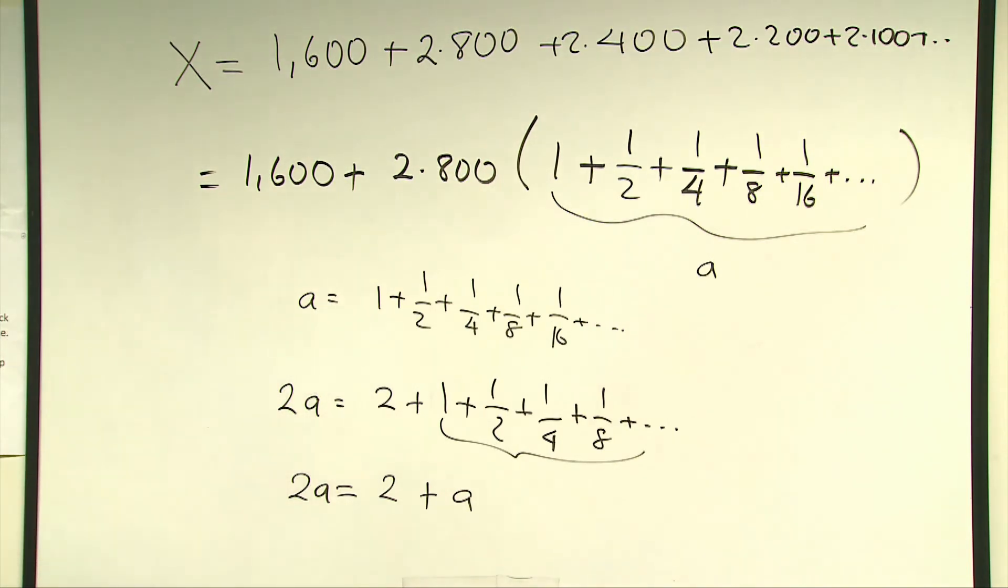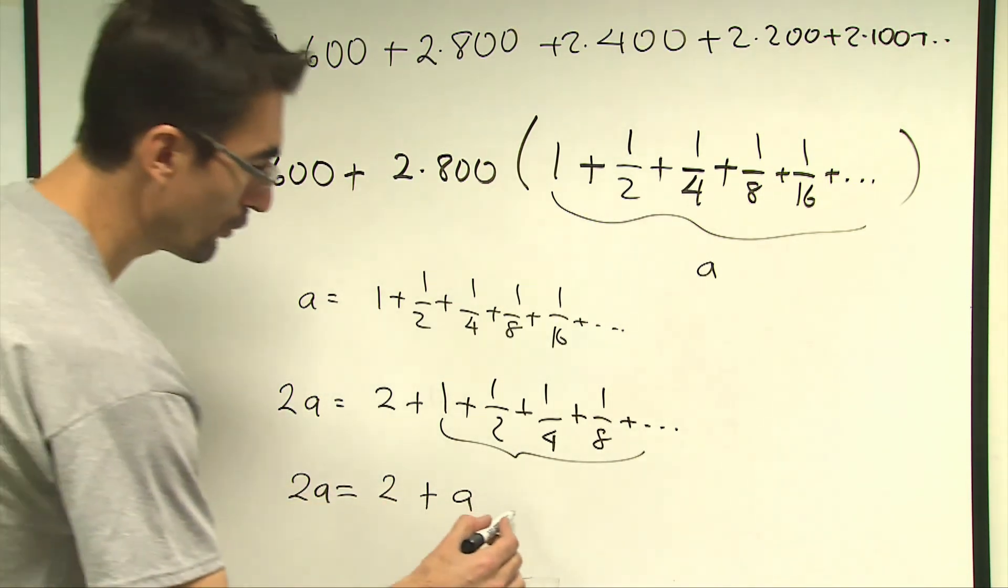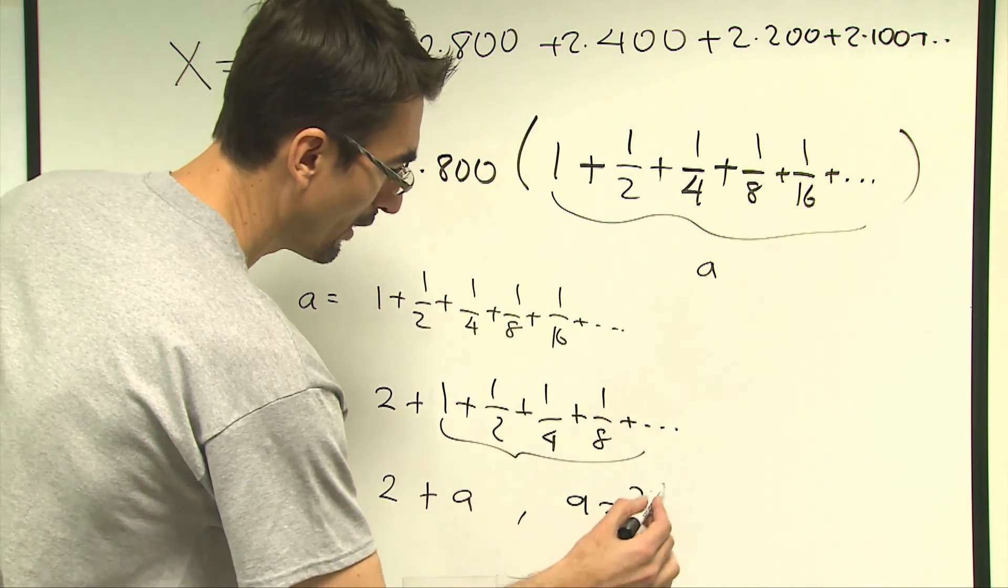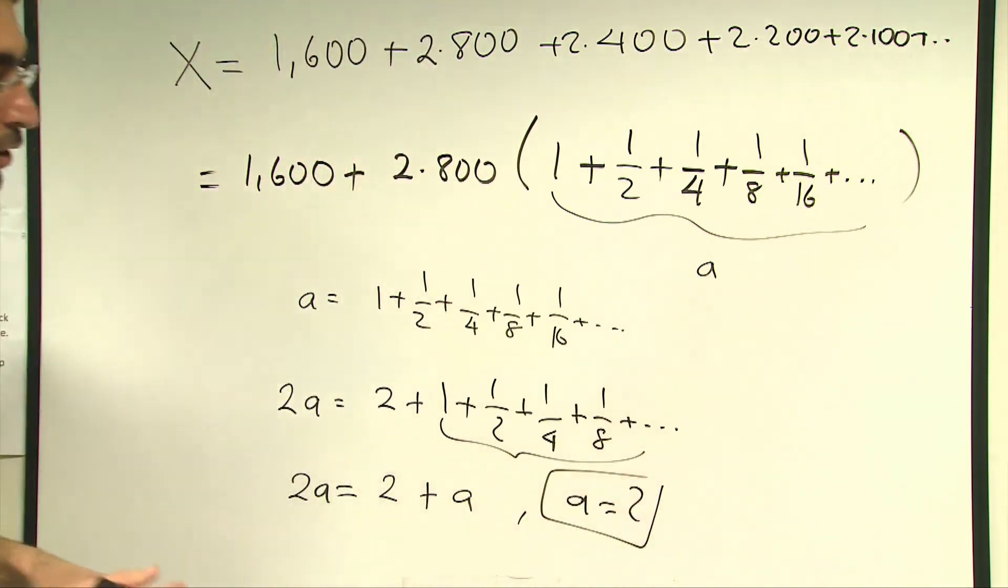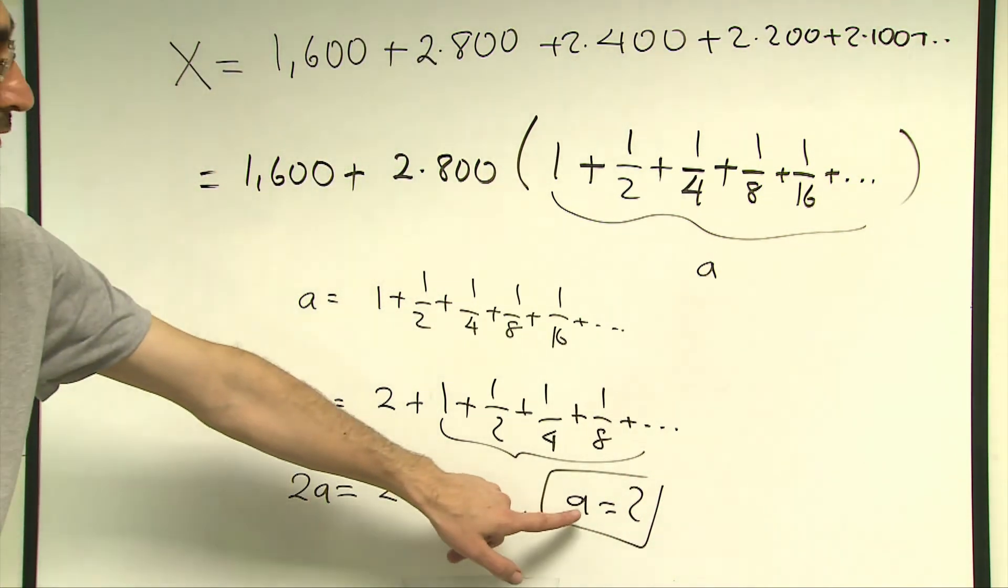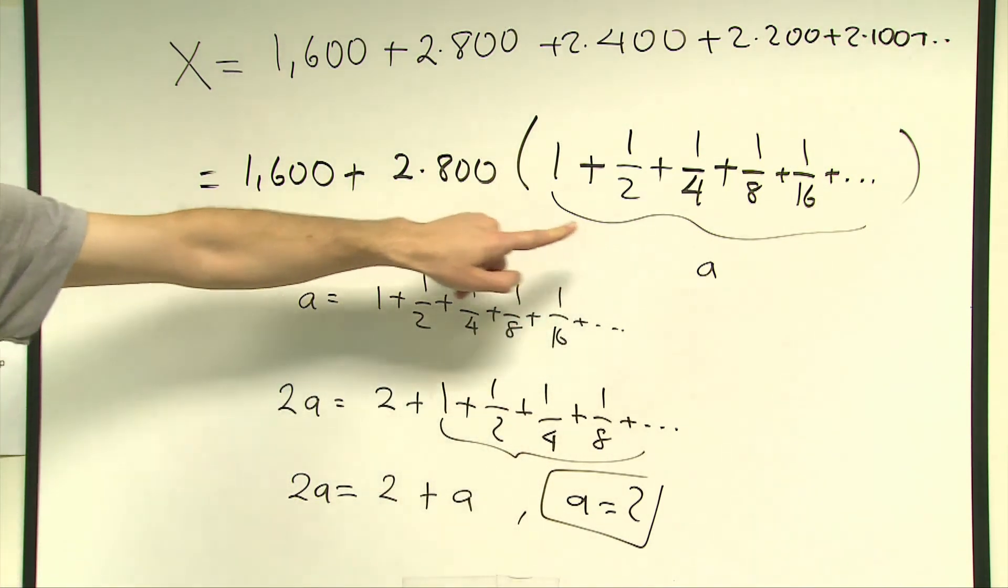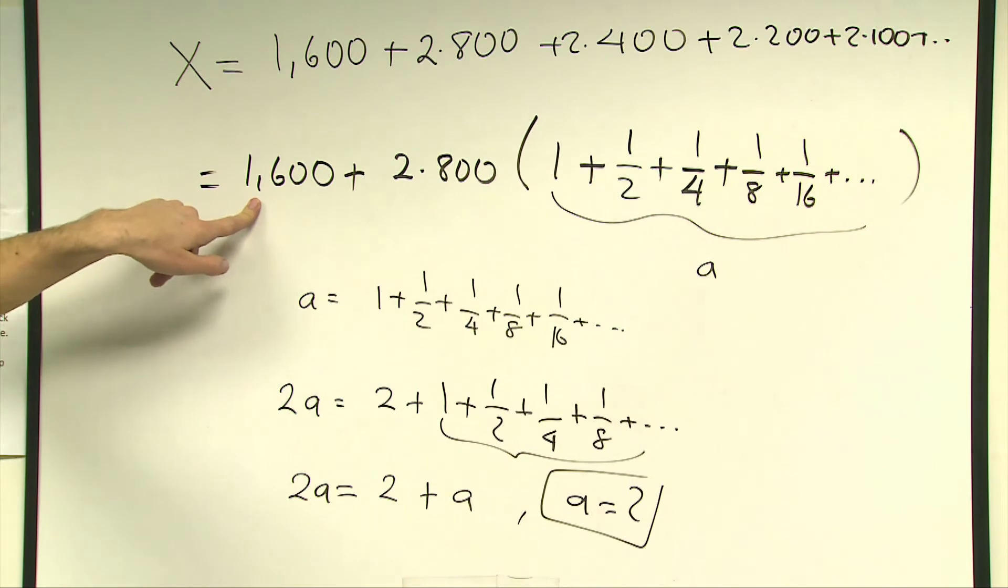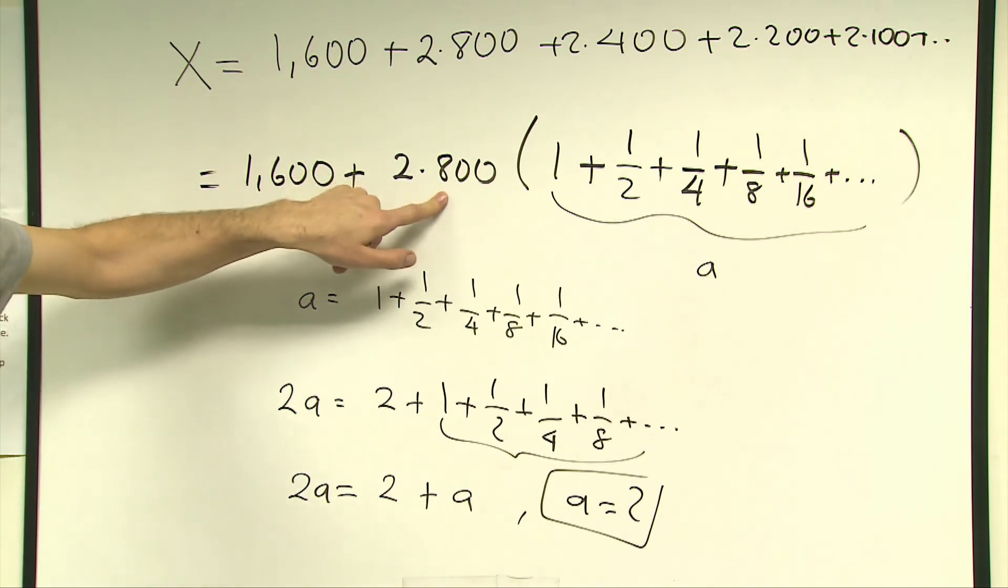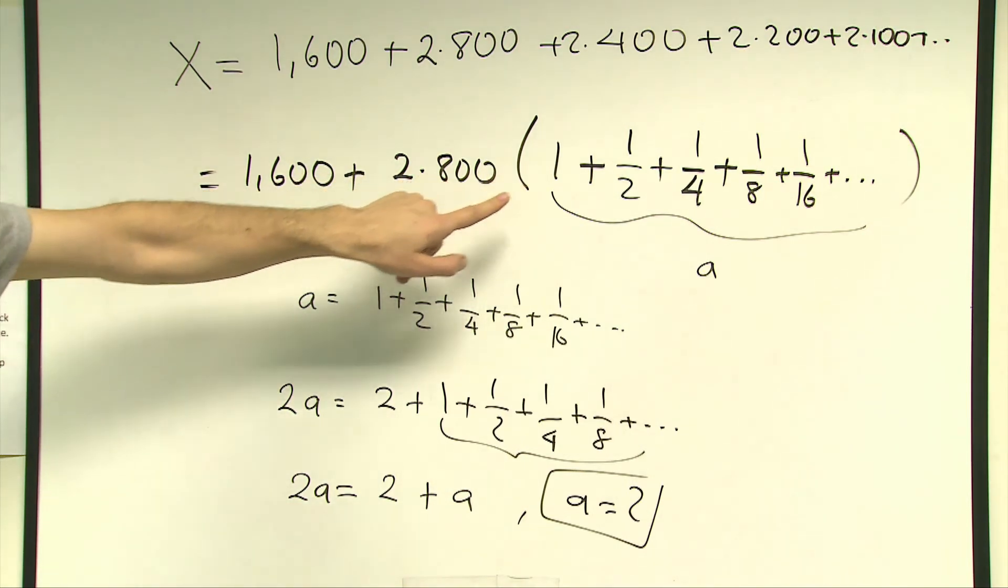Okay I'm almost done, just bear with me. All you need to do is replace this a in the original expression, and that's going to be 1600 plus 2 times 800 times another 2 which will give you